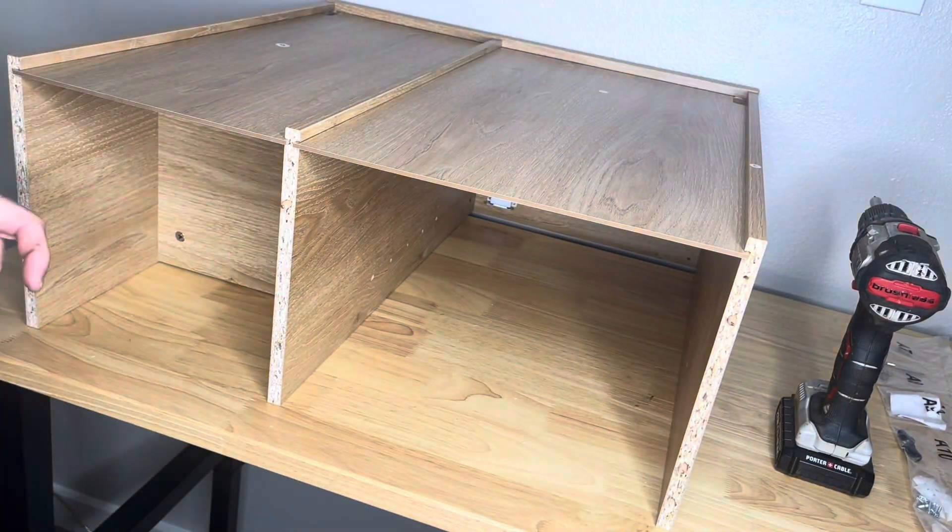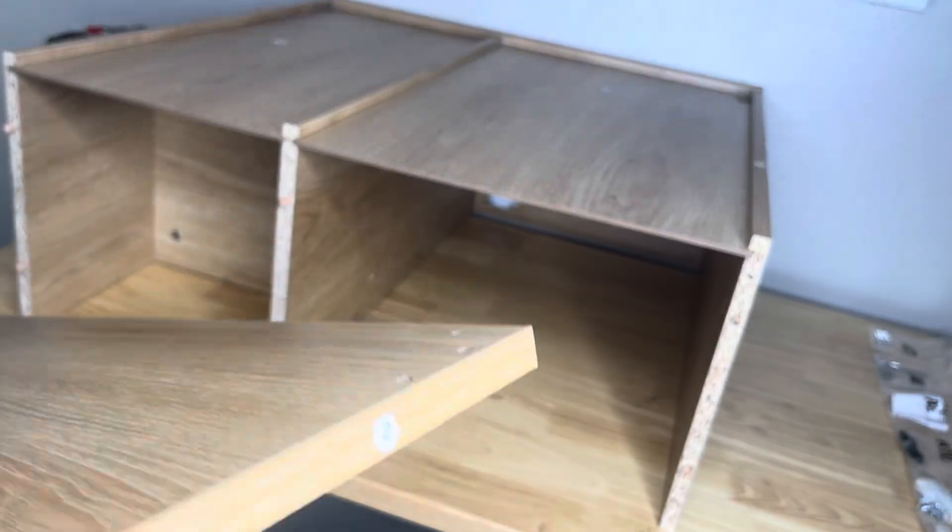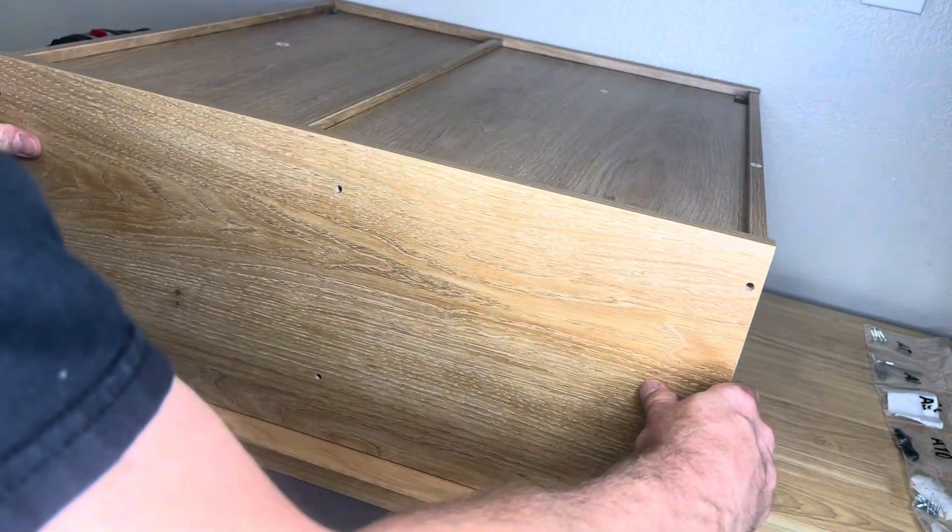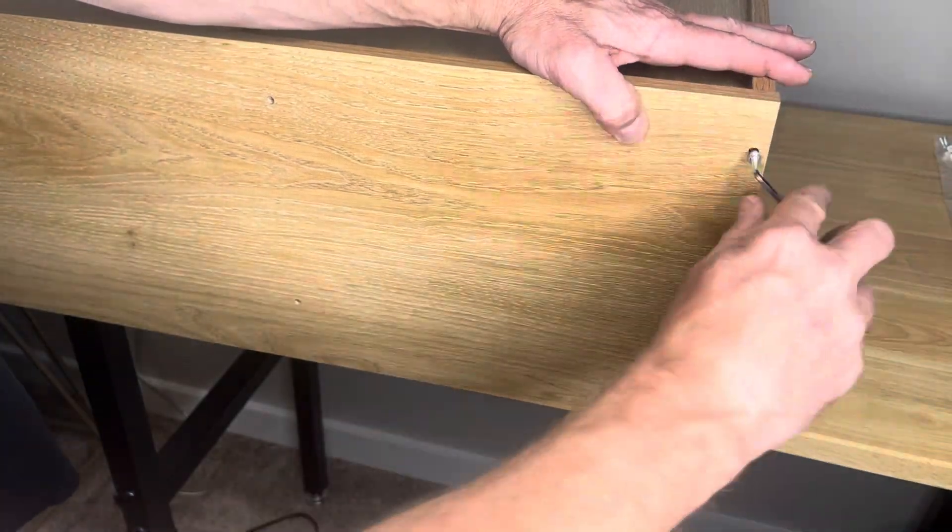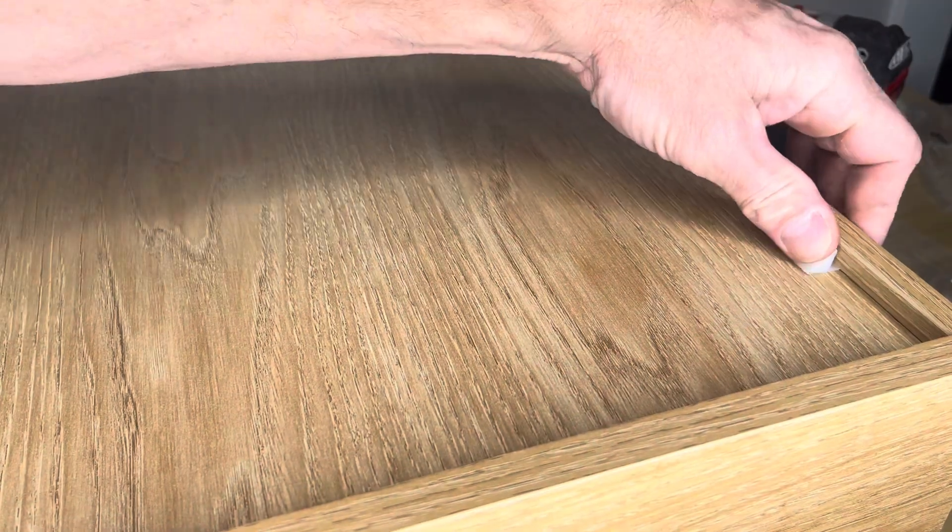Putting the wood dowels in the bottom. There's six of them that go in the bottom, two on each vertical run there. Now just putting that in there, tightening it down.